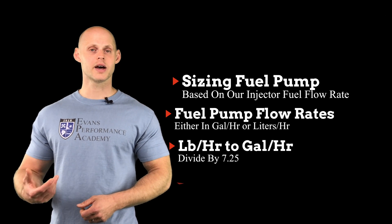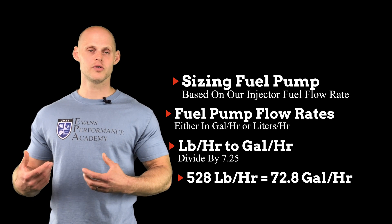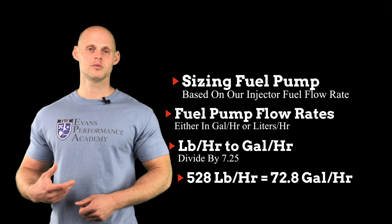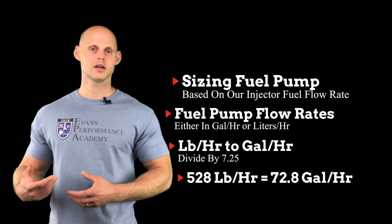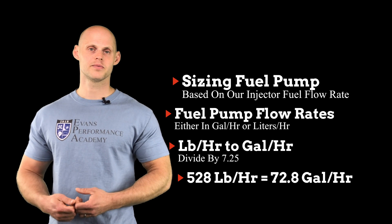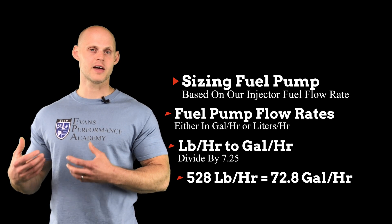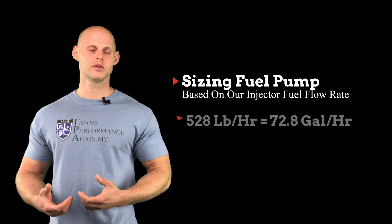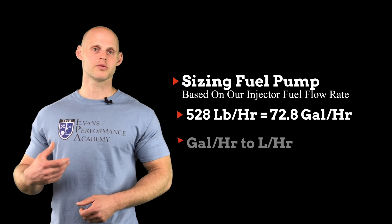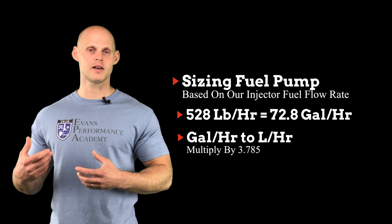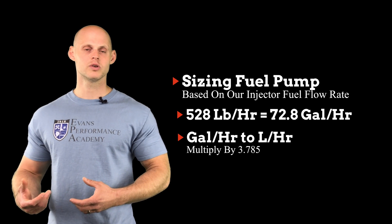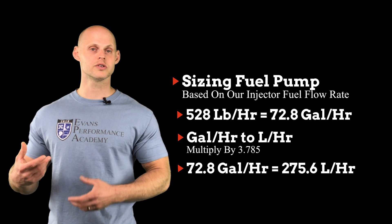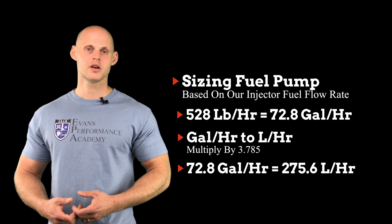When we do that, we find that our new fuel pump flow rate is going to be 72.8 gallons per hour. Now if we wanted to convert that into liters per hour, we would simply multiply that by 3.785, which would then give us an approximate value of 275 liters per hour.